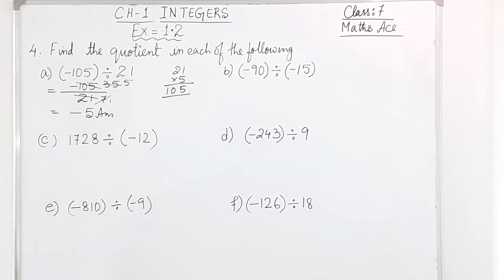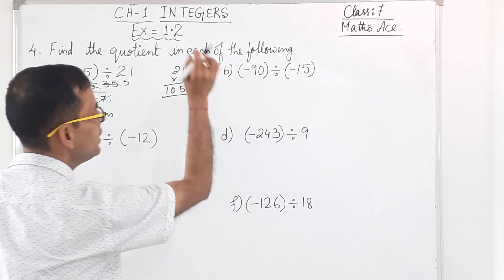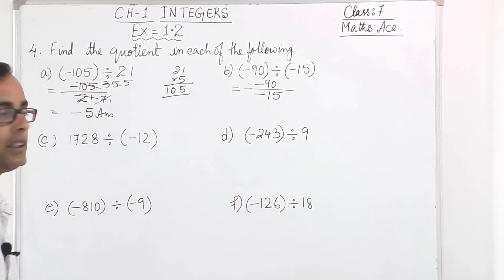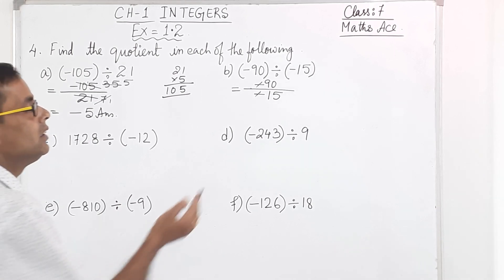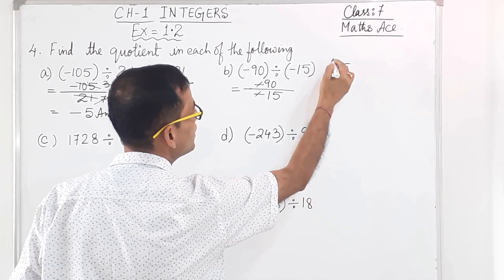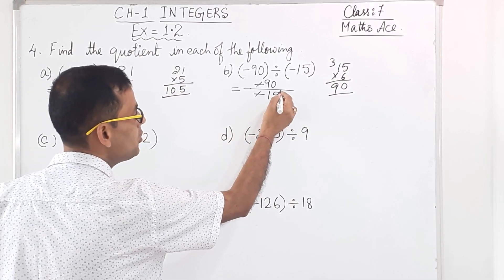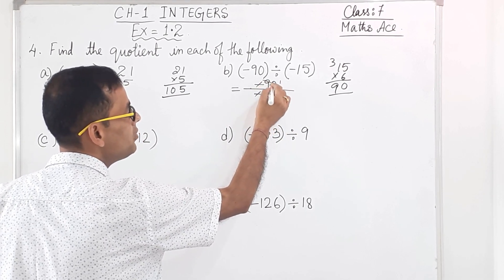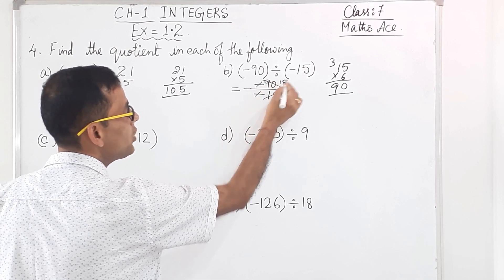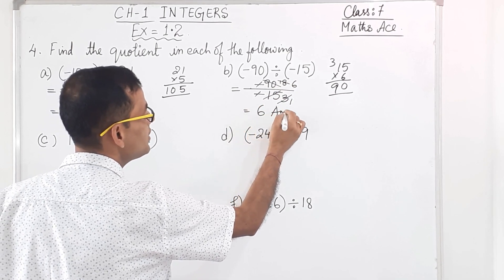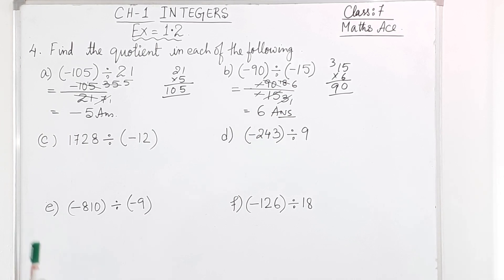For those who want to cut directly with 21: 21 times 5 is 105, so the answer is minus 5. Now next one, B. We write minus 90 in the numerator and minus 15 in the denominator. Both minus signs cancel. If you know the 15 table: 15 times 6 is 90, so you cut with 6. If not, cut with 5 first, then 3. The answer is 6.